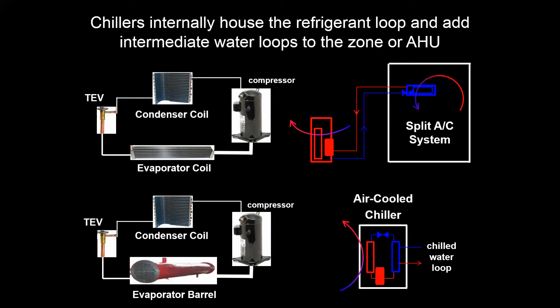Last time we looked at a simple DX vapor compression system and how it was split between components in the zone and components out in the ambient air. With a chiller, all of those four main vapor compression components are housed internally in one device called a chiller, that interacts with the chill water loop on the evaporator side and the ambient air on the condenser side if it's an air-cooled chiller.